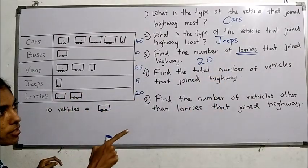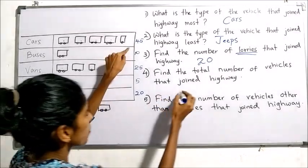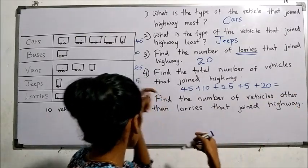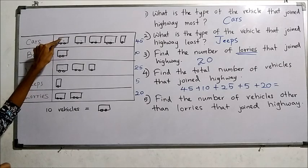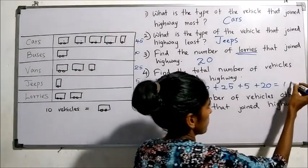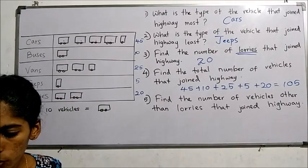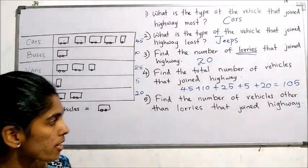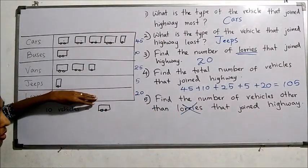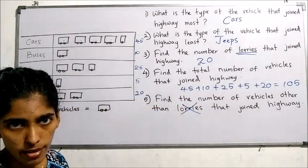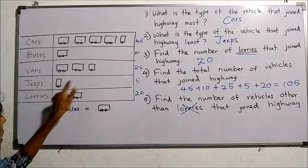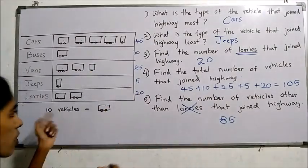Find the total number of vehicles that joined the highway. We need to add: 45 plus 10 plus 25 plus 5 plus 20. When we add: 10, 20, 30, 40, 50, 60, 70, 80, 90, 100, 105 vehicles in total. The last question: find the number of vehicles other than lorries that joined the highway. From 105 subtract 20, or by counting: 10, 20, 30, 40, 50, 60, 70, 80, 85. Other than lorries, the answer is 85.